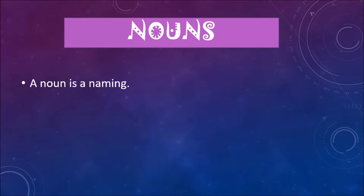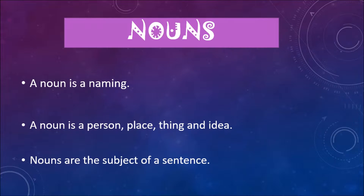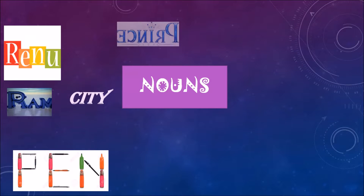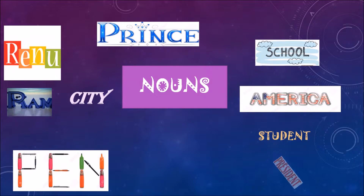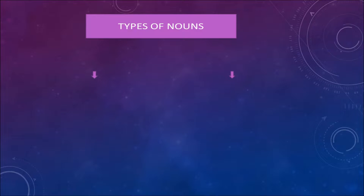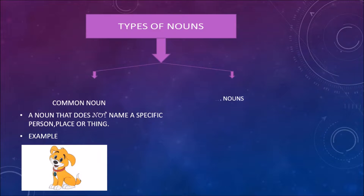A noun is a naming word — the name of a person, place, thing, or idea. Nouns are the subject of a sentence. These are all examples of noun. Now, types of noun: there are two types. Common noun — a noun that does not name a specific person, place, or thing. For example: dog.